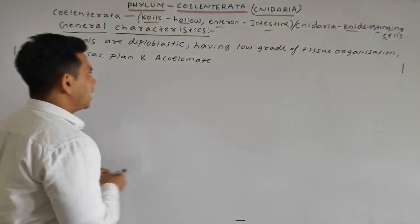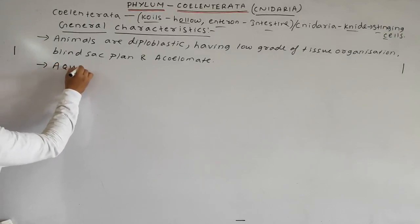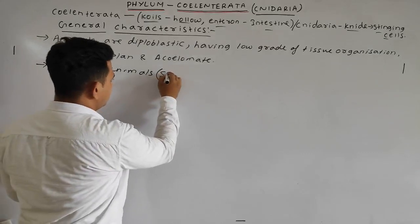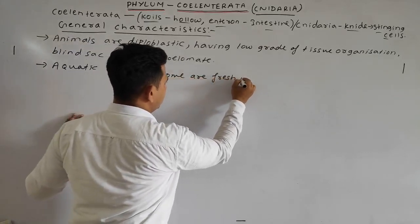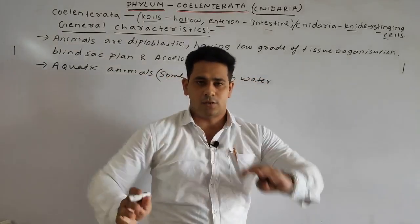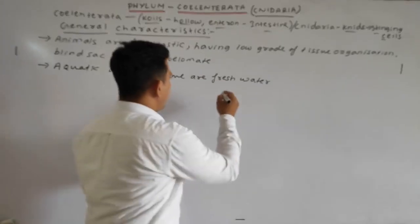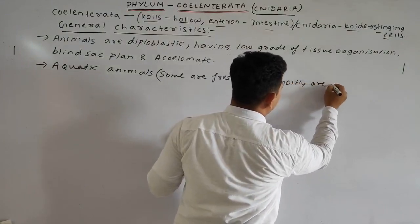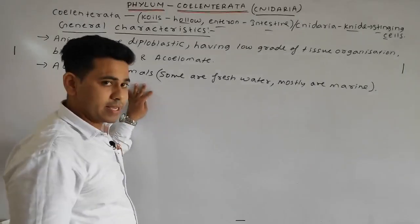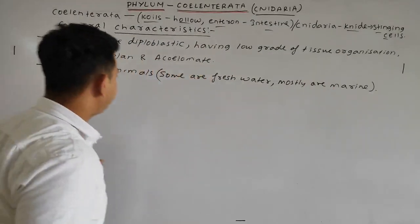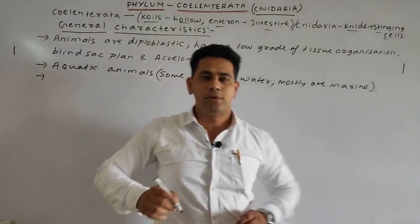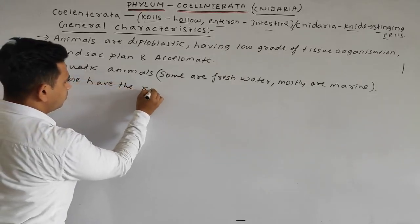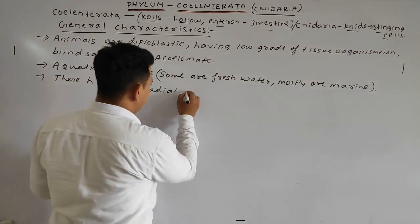These are aquatic animals - some are fresh water and mostly marine. Fresh water means living in ponds and lakes. Mostly they are marine, living in seas and oceans. These aquatic animals have radial symmetry.